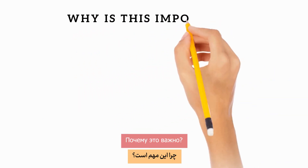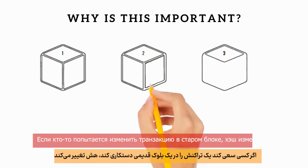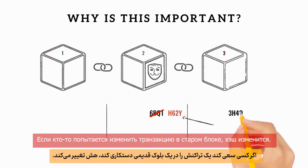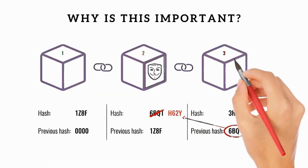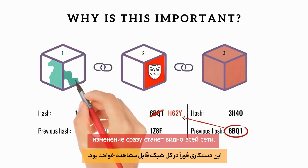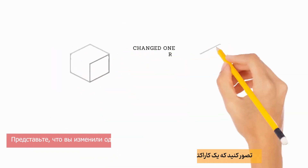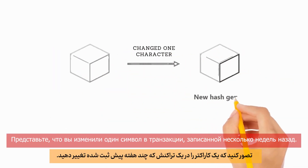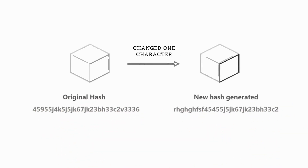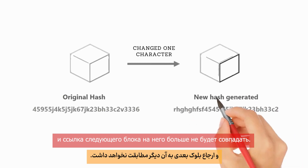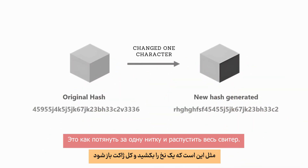Why is this important? If someone tries to tamper with a transaction in an old block, the hash will change — and because every subsequent block depends on the previous hash, the tampering becomes instantly visible to the entire network. For example, if you changed one character in a transaction recorded weeks ago, the hash of that block would change, and the next block's reference to it would no longer match. It's like pulling one thread and unraveling an entire sweater.